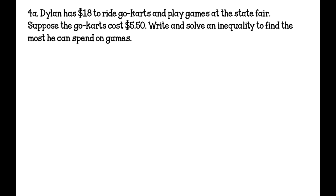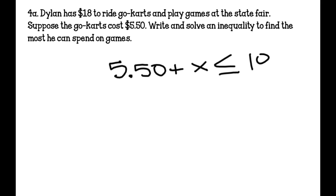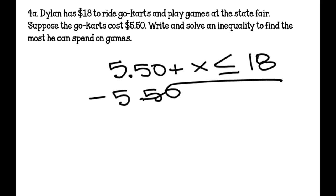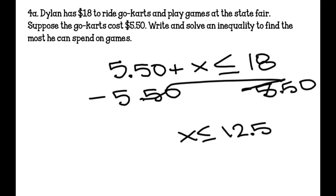Dylan has $18 to ride go-karts and play games at the state fair. The go-karts cost $5.50. Write and solve an inequality to find the most he can spend on games. So 5.50 plus X must be less than or equal to 18. Subtract $5.50 from both sides and you get X is less than or equal to $12.50 — the most he can spend on games.